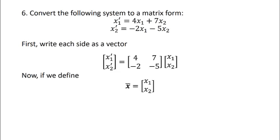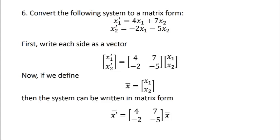And so if we define the vector x bar to be x1, x2, then our system can be written in matrix form as x prime equals 4, 7, negative 2, negative 5 times x. And this is what it means to write our system in matrix form.